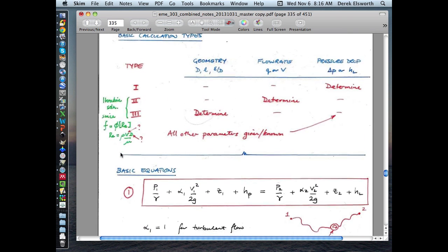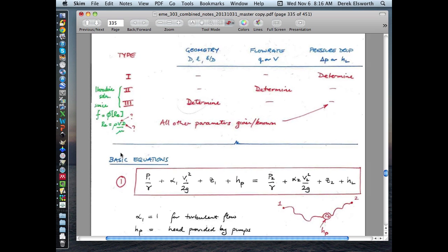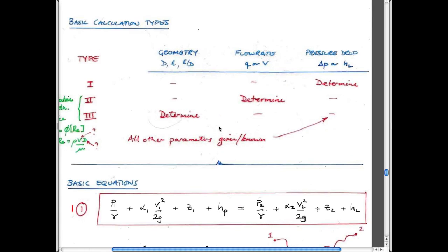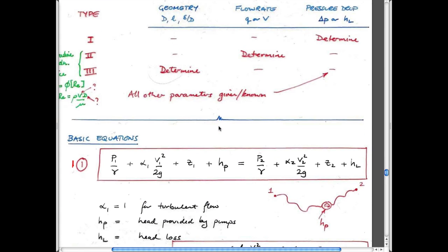We've talked about Moody charts and how to convert parameters for non-circular section behaviors. The standard equation conventions are: upstream is the left-hand side, number one; downstream is the right-hand side. HP is always positive if you're putting energy into the system, negative if you're taking it out as a turbine. Head losses are always positive. The pump head equals the power divided by the mass flow rate.